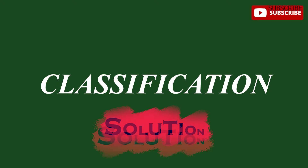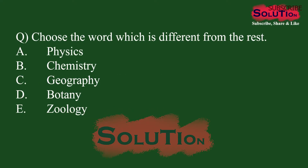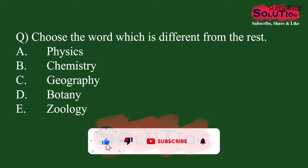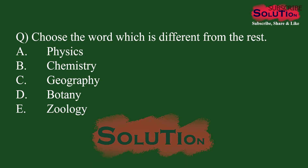We are starting with classification. In classification we normally classify — we separate a word from a group of words. A group of words is given and we try to find out the word which has a different meaning, while the rest have the same meaning or are part of the same thing. For example, physics, chemistry, geology are part of science, but geography is not part of science.